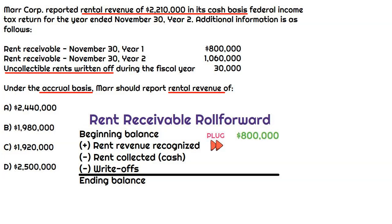If we think about what happens when the company collects rental revenue in the form of cash, that's going to decrease the rent receivable because it's no longer outstanding. We know they collected rent in the form of cash of $2,210,000, so that's going to decrease our amount — that's why it's negative.